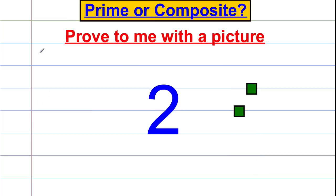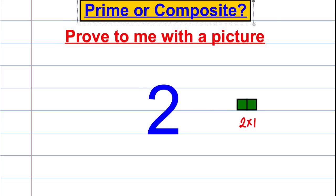And lastly, two. Have a think about that — prime or composite. Hopefully with pretty ease you'll realise that's prime. The only way you can arrange that in a rectangle is two by one. There are no other whole numbers that multiply to give you two other than one and two. So this is a prime number.